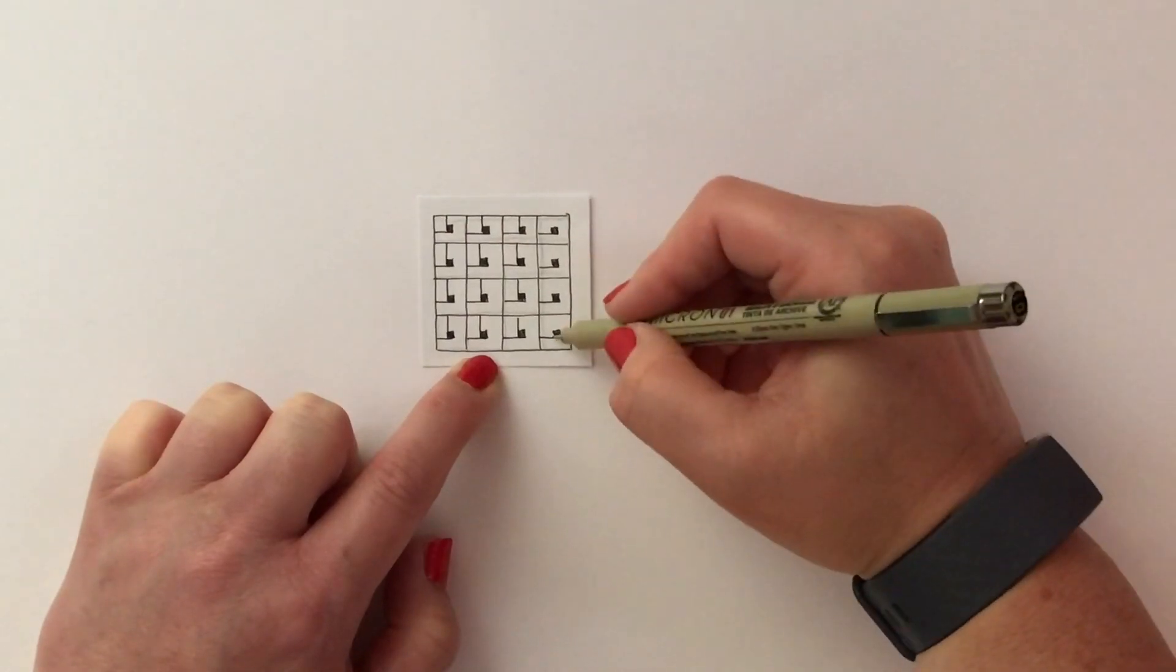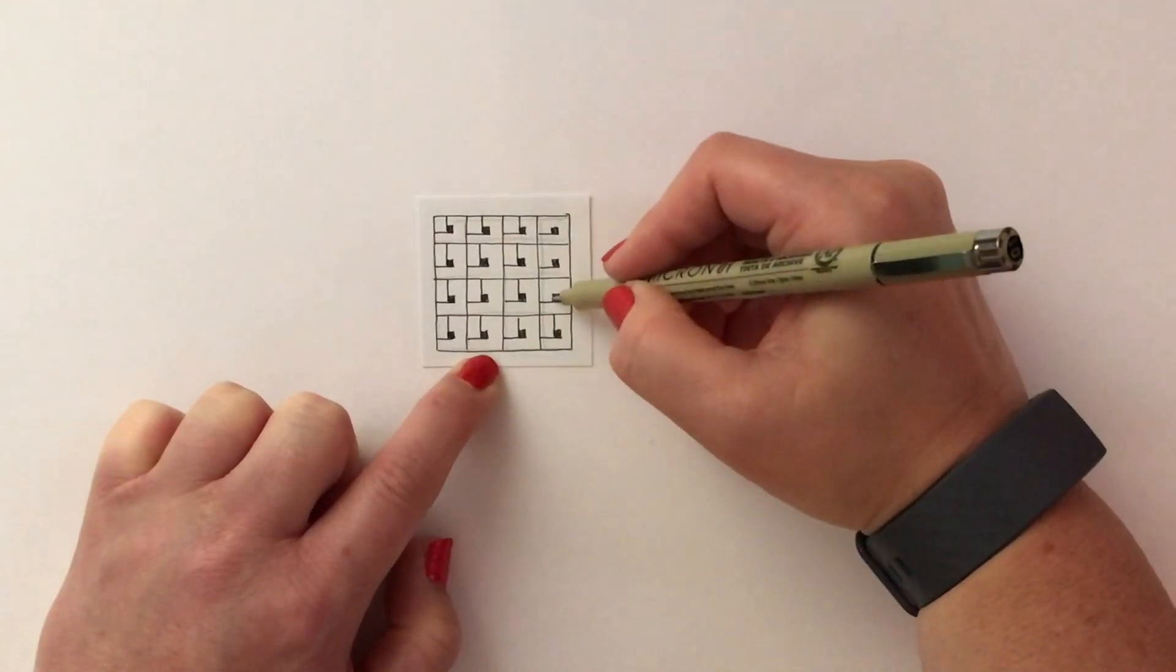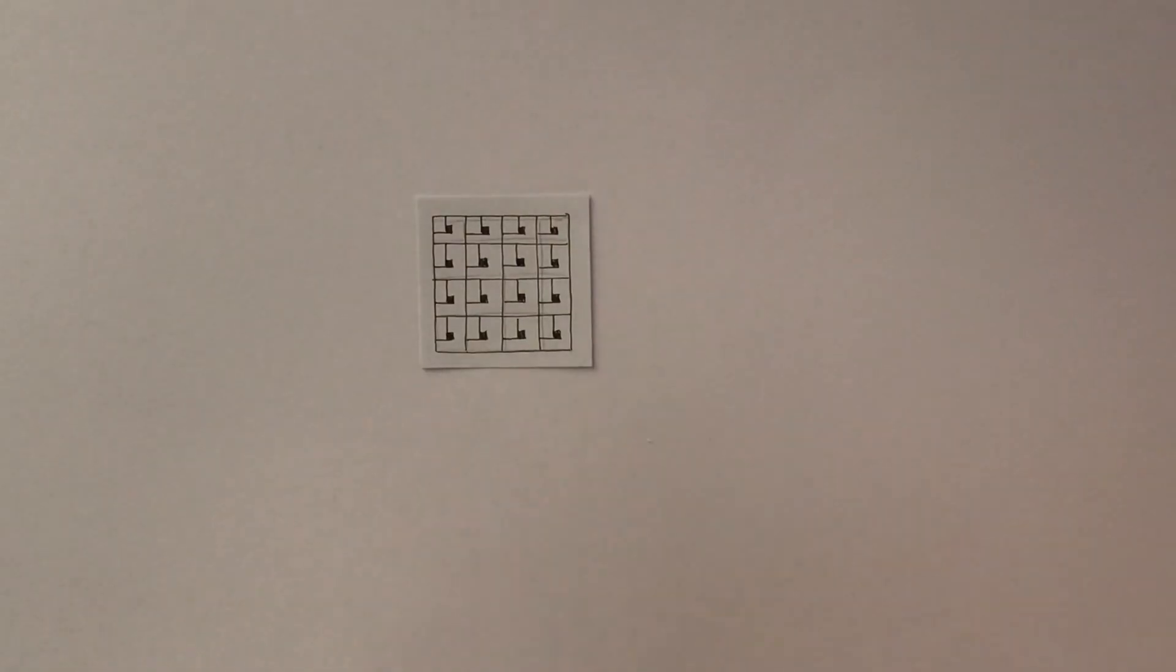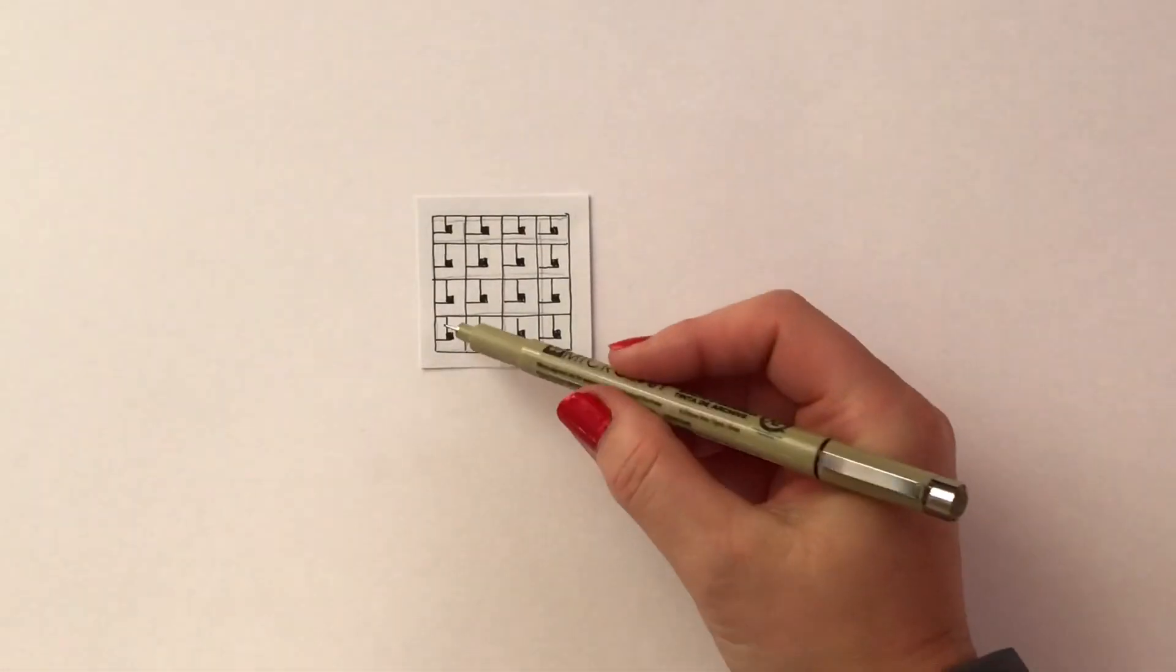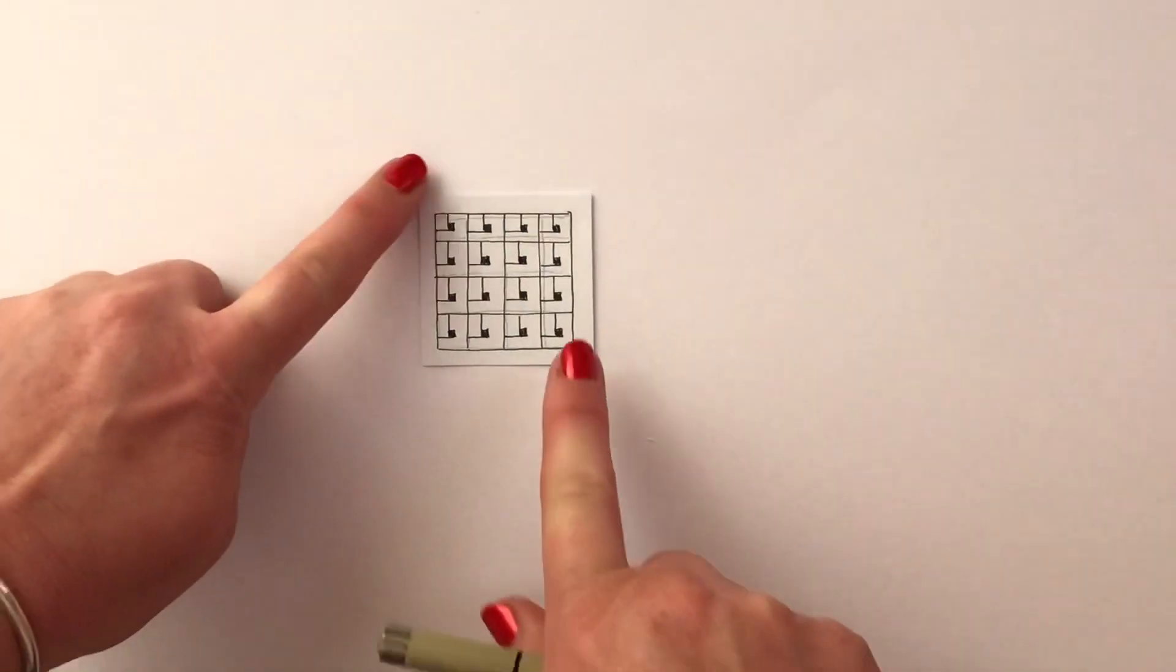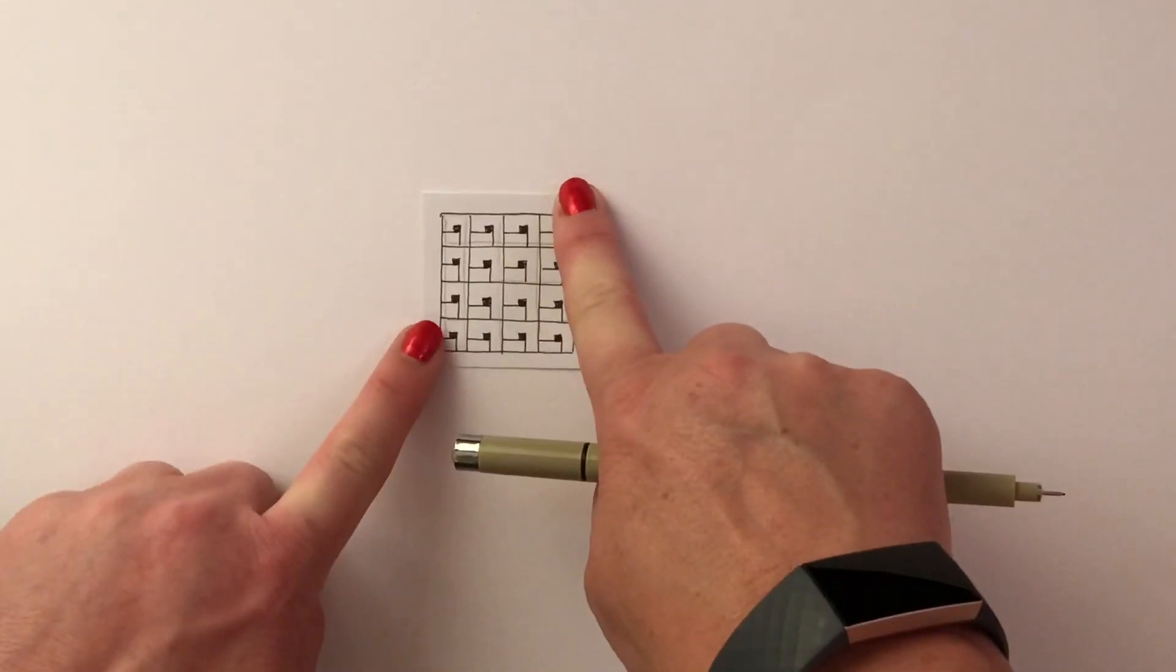What you want to do when you're drawing this I find is to draw all of the boxes going in the same way. Some people prefer just to do one square all the way around but I find it far more relaxing and meditative doing it this way.